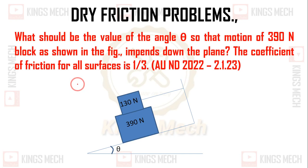Hello guys, welcome back. In this video we are going to solve a problem on dry friction. This problem was in the November-December 2022 exam. What should be the value of the angle theta so that the motion of the 390N block as shown in the figure impends down the plane?